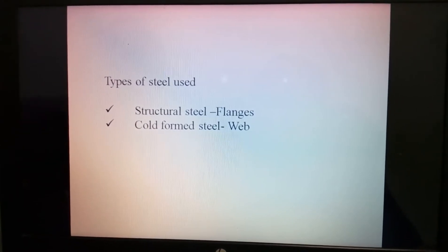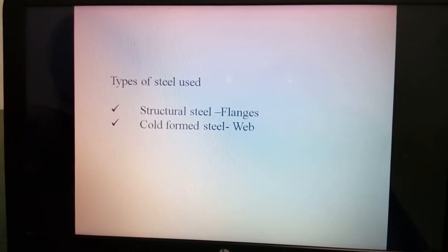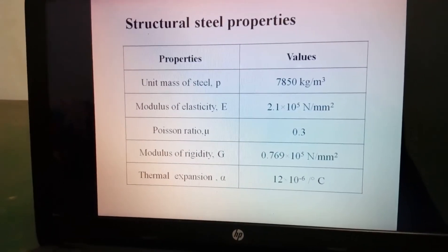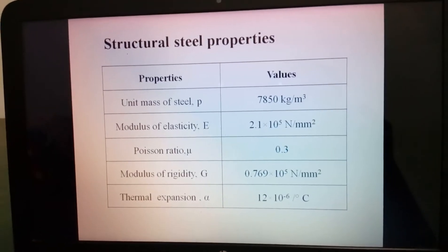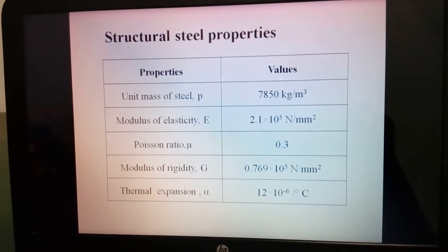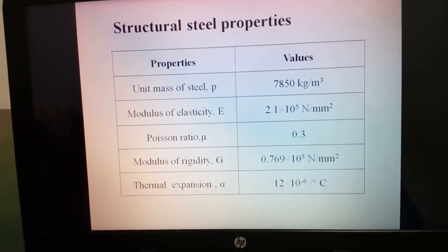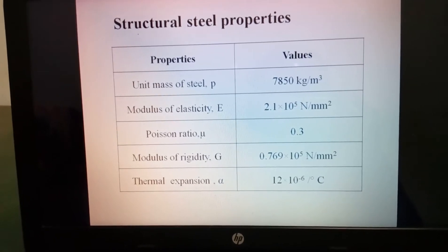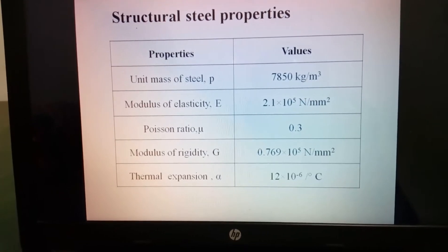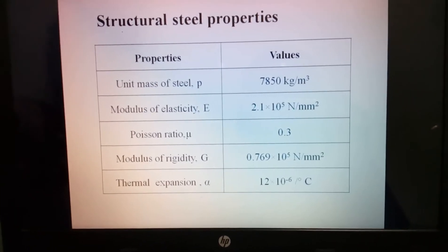These two types of steel I used in my project. In flanges I used structural steel and in web cold formed steel. These are the properties of structural steel. The density is 7850 kg per meter cube and modulus of elasticity E is 2.1 into 10 power 5 N/mm². Poisson ratio mu is 0.3, modulus of rigidity is 0.769 into 10 power 5 N/mm².